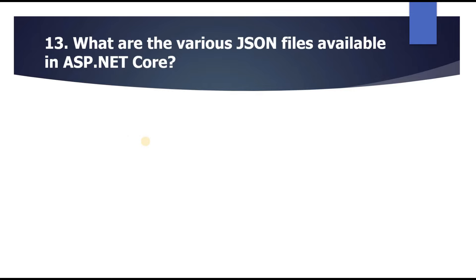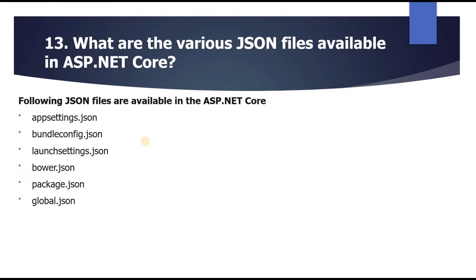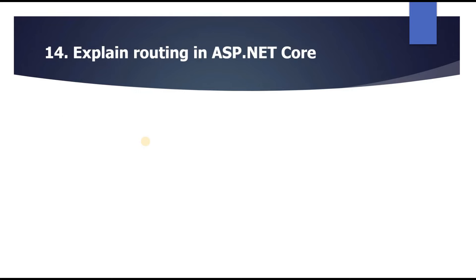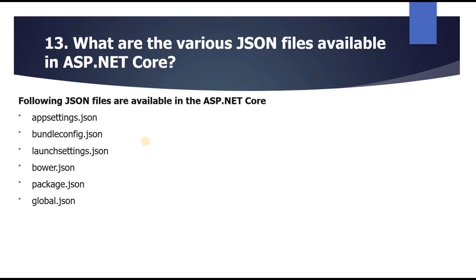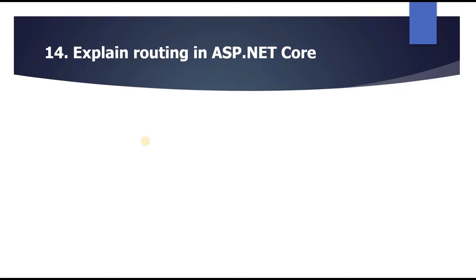The next question is: what are the various JSON files available in ASP.NET Core? The following JSON files are available: appsettings.json, bundleconfig.json, launchsettings.json, bower.json, package.json, and global.json.